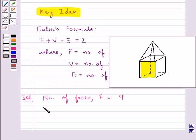Now let's find out the number of vertices. The number of vertices, V, is: this is one vertex, 2, 3, 4, 5, 6, 7, 8, 9. So in all, the number of vertices V is equal to 9.